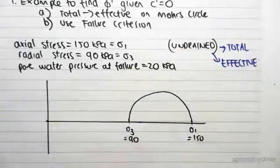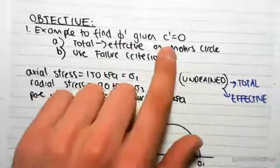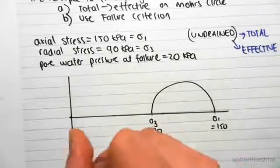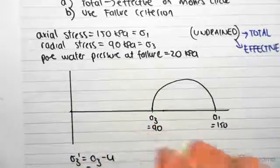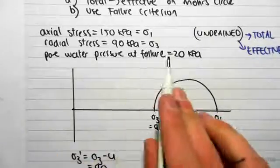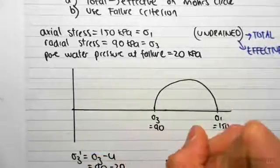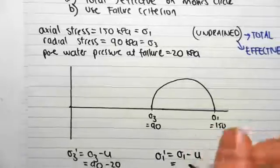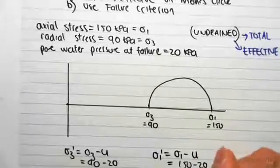We need our failure criteria to be in effective stress, and we're given effective stress parameters, so we need to go from total to effective stress. Sigma3 dash equals sigma3 minus the pore water pressure: 90 minus 20 equals 70 kPa. Similarly, sigma1 dash equals sigma1 minus u: 150 minus 20 equals 130 kPa.